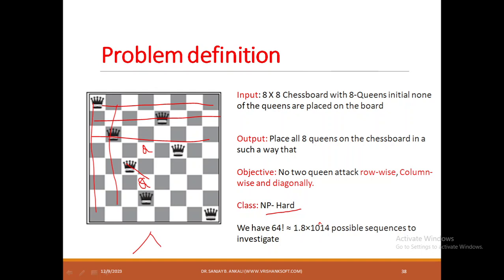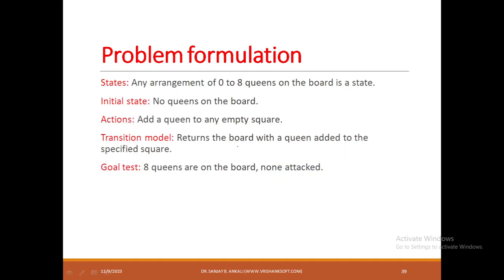Now let us formulate this problem. What is a state? The given state is we have to arrange 0 to 8 queens on the chessboard, and the chessboard size is 8 rows and 8 columns. What is the initial state? The initial state is none of the queens are placed initially.